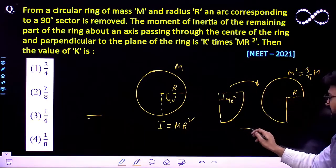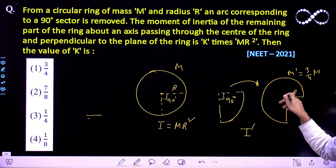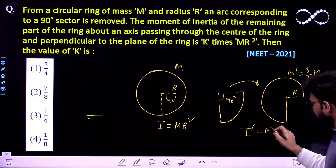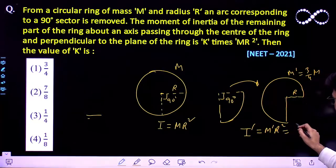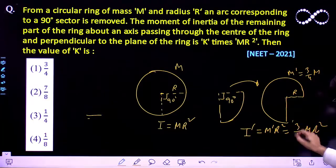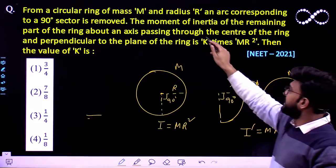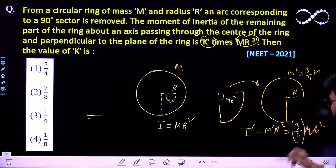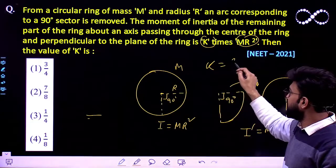The moment of inertia I dash about this axis must be equal to M dash into R square, which is 3/4 M into R square. It says it is K times MR square, so that means K comes out to be 3/4.